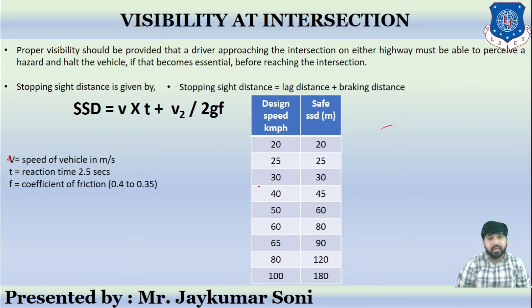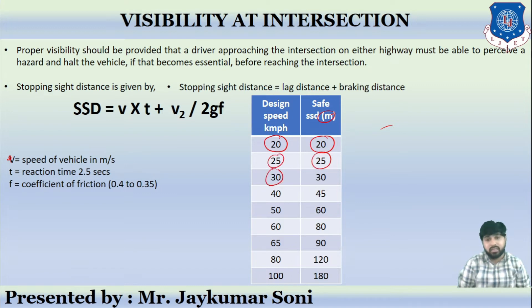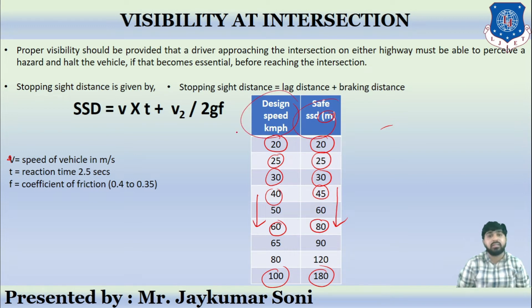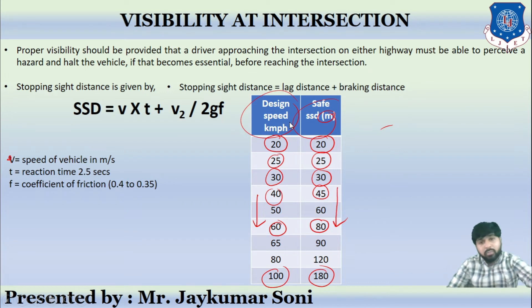There are certain IRC criteria: if the design speed is 20 km/h, the safe stopping sight distance should be 20 m; at 25 km/h it is 25 m; at 30 km/h it is 30 m; at 40 km/h it is 45 m. As the speed increases, the safe SSD also increases. For 60 km/h, the SSD is 80 m; for 100 km/h, the SSD is 180 m. This is how design speed and safe SSD relate, confirming that visibility plays an important role.